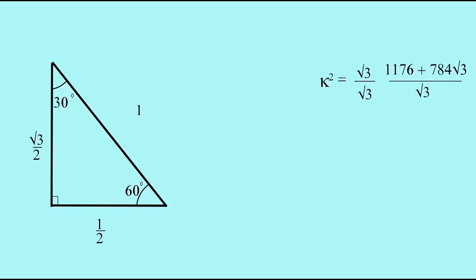We'll rationalize that result by multiplying by √3/3, giving us (1176√3 + 2352)/3. Dividing both terms by 3 generates 392√3 + 784. Finally, we take the square root of that, and that's our k value.